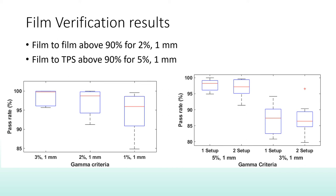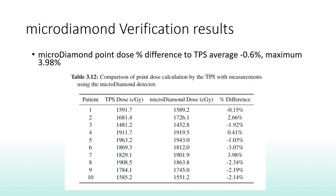Film results showed that setting up the phantom twice did not introduce additional errors. Point dose verification resulted in an average percent difference to TPS point dose at the isocenter of minus 0.6%, with a maximum percent difference of 3.98%.